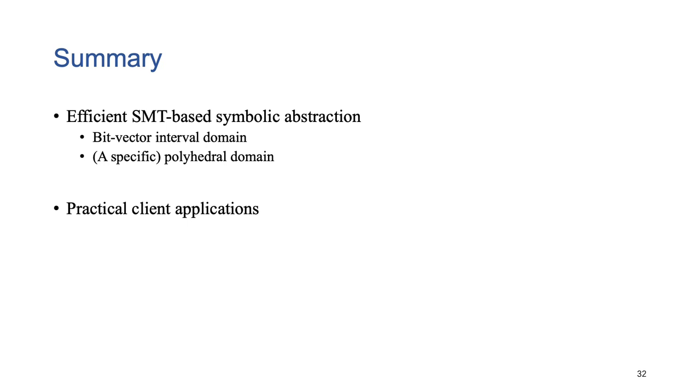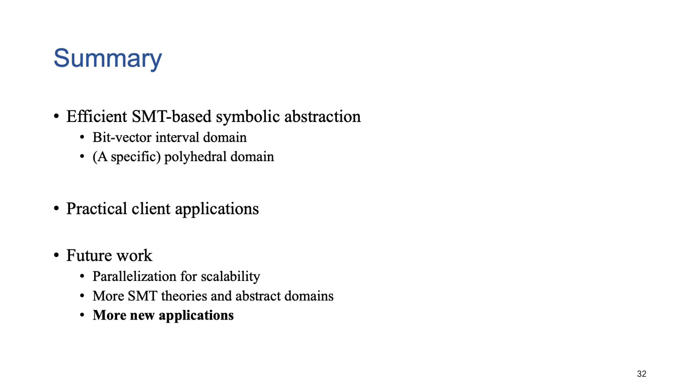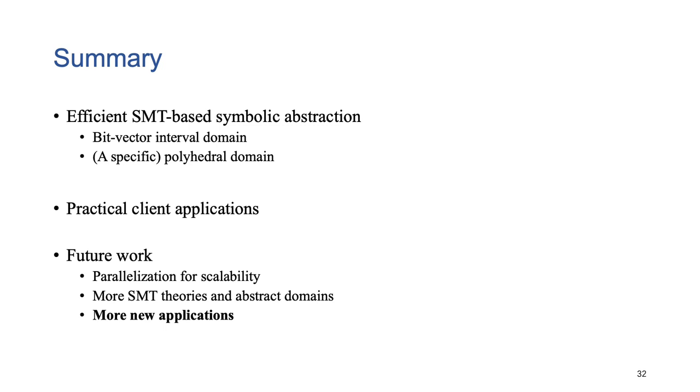To summarize, in this work, we have proposed two efficient algorithms for symbolic interval and polyhedral abstraction, respectively. For future work, we would like to explore the use of parallelization for better scalability, to consider more theory types and domains, and to explore more possible applications. Actually, symbolic abstraction has deep, wide, and beautiful connections with many problems in computer science. We hope to encourage more exploration of this problem in our community. And perhaps our work could provide a new insight into other problems. Thank you.